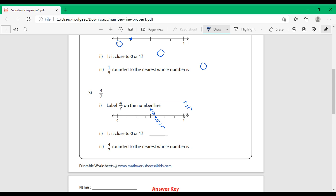It is closer now to 1 than it is to 0. So, 4 sevenths rounded to the nearest whole number is 1.